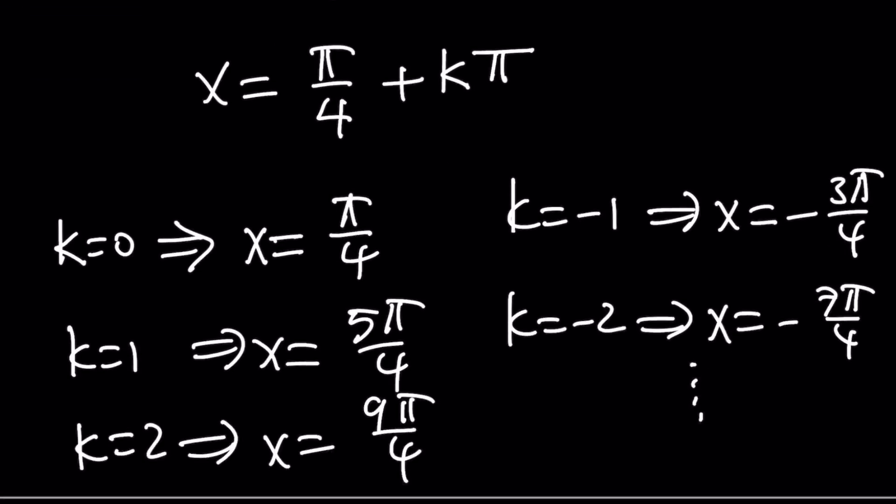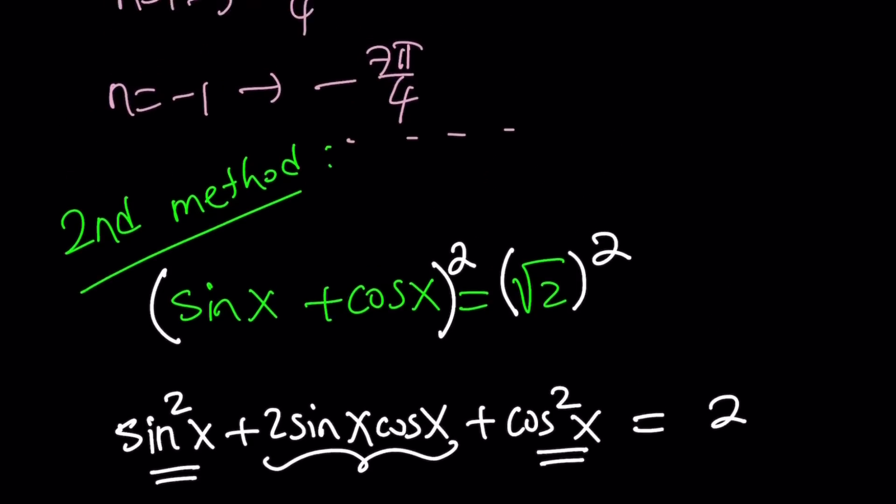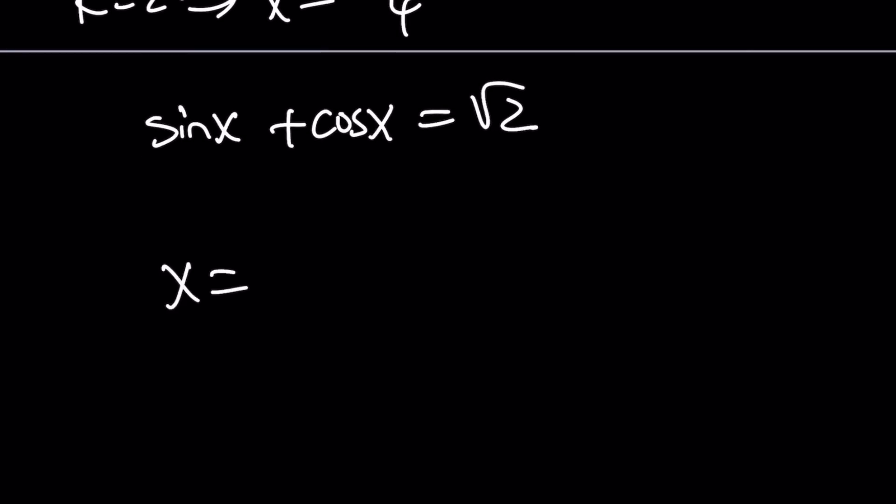So pi over 4 and then we jump to 9 pi over 4. So this is actually an invalid solution and you could easily check that because if you look at the original problem you're going to notice 5 pi over 4 does not satisfy. Therefore the solutions are given by this equation pi over 4 plus 2n pi.